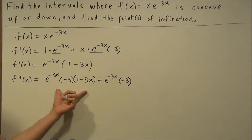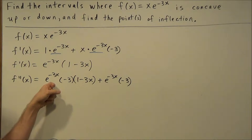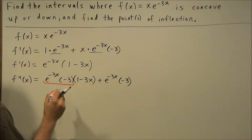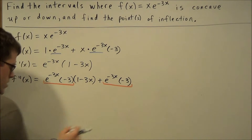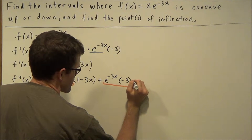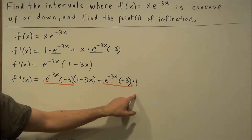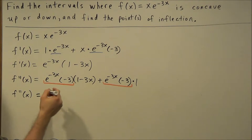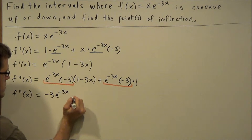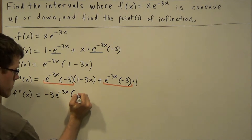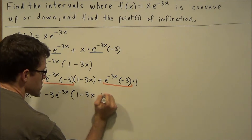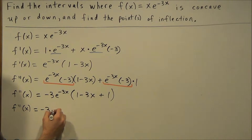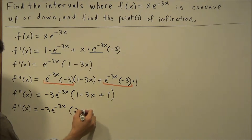All we did from one line to the next was use product rule, and we had to be careful to use chain rule again when taking the derivative of the e to the negative 3x term. What we can do next is factor out e to the negative 3x times negative 3. One thing we don't want to forget is there's always that invisible times 1 at the end, so we leave a 1 behind when factoring from the second part. So f double prime of x equals negative 3 e to the negative 3x times, on the first term we're left with 1 minus 3x, and on the second term plus 1, giving us f double prime of x equals negative 3 e to the negative 3x times 2 minus 3x.